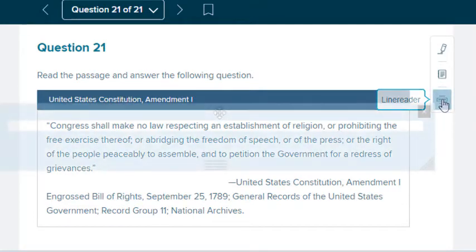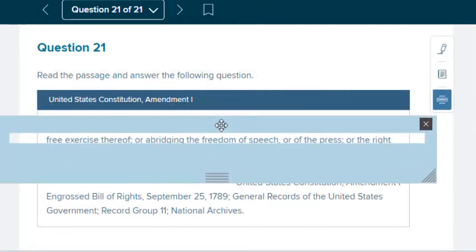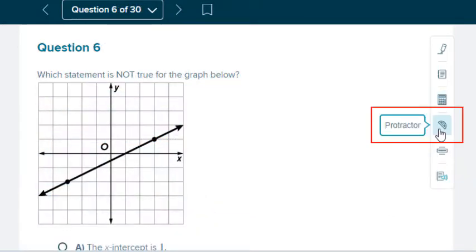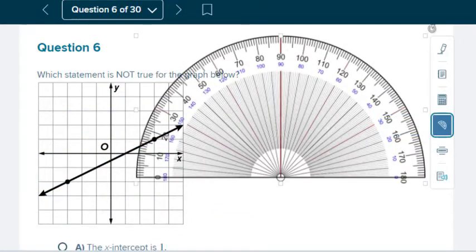The line reader can be positioned over a selected line to help the student view a large amount of text line by line. The protractor provides a protractor for students to use during the test.